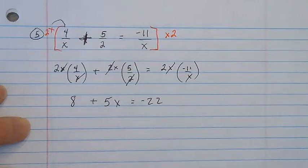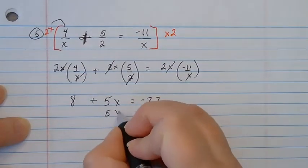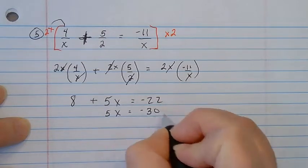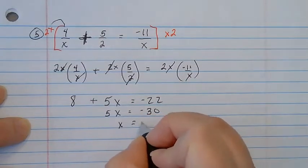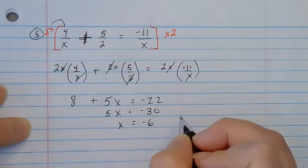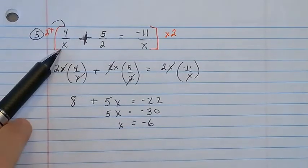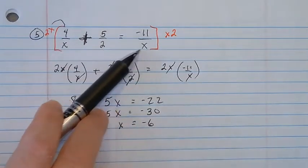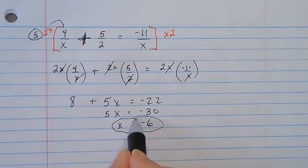Now I'm going to keep solving. Subtract 8 from both sides, and divide by 5. I want to go back and check my answer and make sure it's okay. It's okay to have negative 6 on the bottom of a fraction, so this is a good answer.